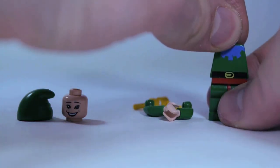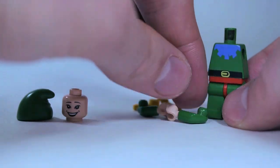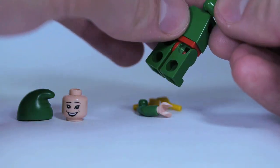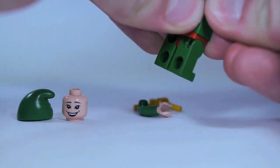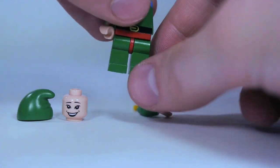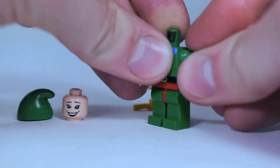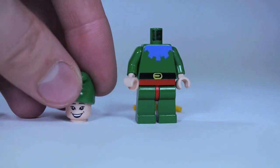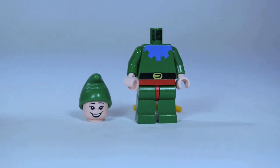Put our torso that we selected on there with the big black belt. Do green arms with the appropriately colored hands. So I'm using flesh-colored hands here. Snap those on. And then this will be his head and his hat. But before we put that on, we need to build his backpack.